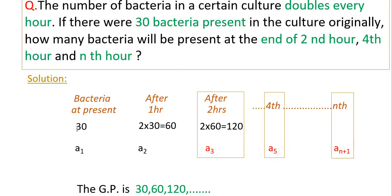You can take the first term 30 as a₁ and second one a₂, a₃ like this. Here after one hour the term is a₂ and after two hours the term is a₃. After fourth hour the term is a₅, then after nth hour the term is aₙ₊₁.